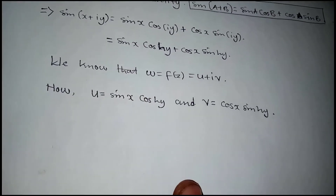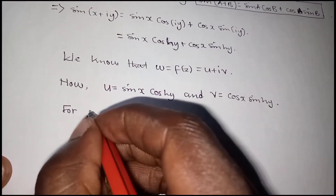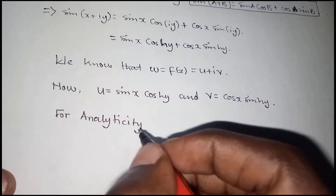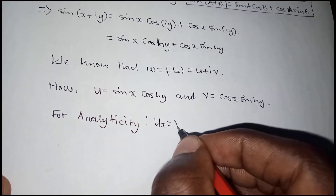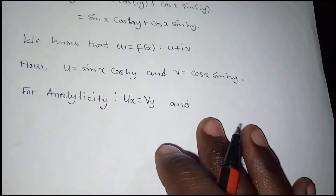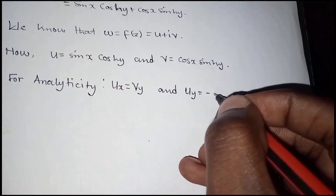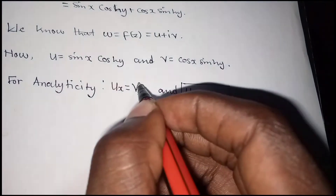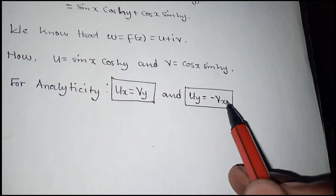For analysis, there are two conditions a function must satisfy to be analytic. The first condition is that the partial of u with respect to x should equal the partial of v with respect to y. The second condition is that the partial of u with respect to y should equal the negative of the partial of v with respect to x.